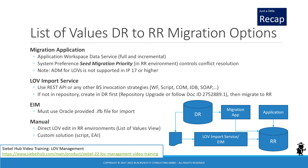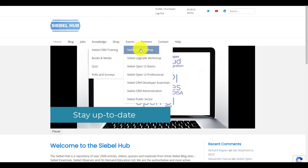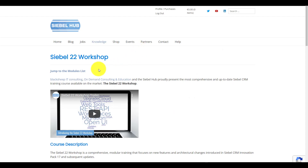Now let's look at options for migrating LOVs from DR to RR environments. LOVs are to be migrated or deployed to RR environments with the help of the Application Workspace Data Service, which is part of the migration application. This works perfectly fine unless customers deviate from the path of truth — strict dev-to-test/dev-to-prod without any changes in environments other than development. As an alternative or supplement to the migration application, customers can deploy list of values data using the LOV import service or, since 19.3, manual editing. Custom scripting of the EAI could replace the manual labor.